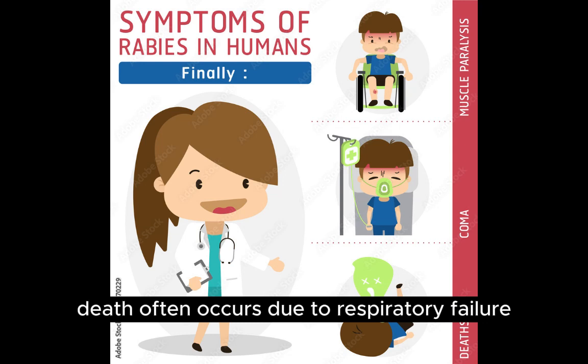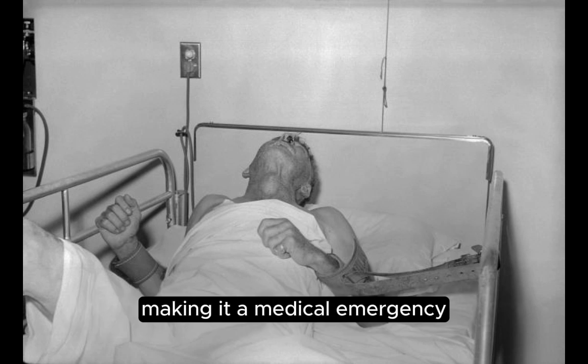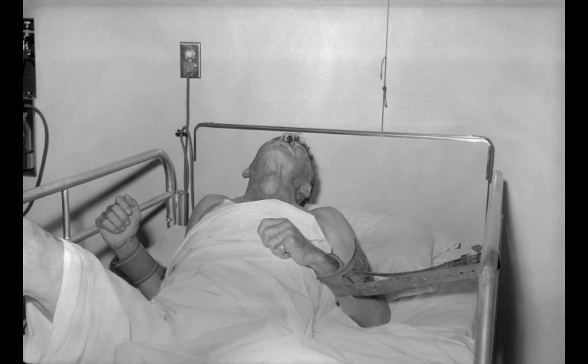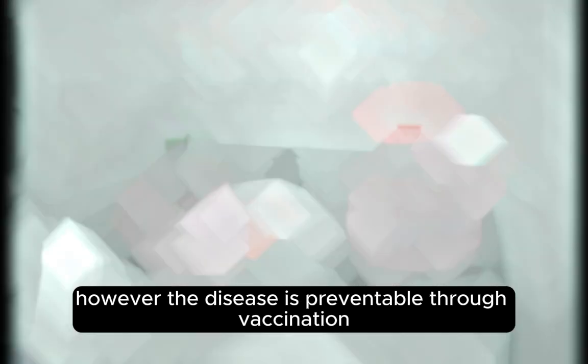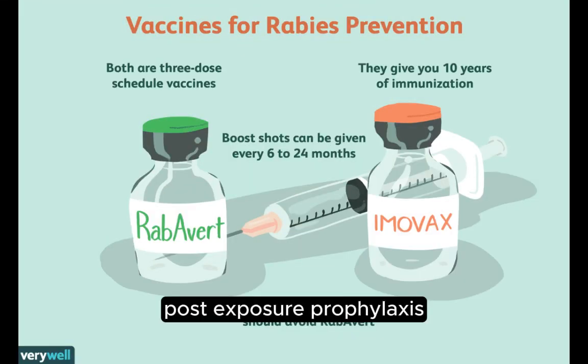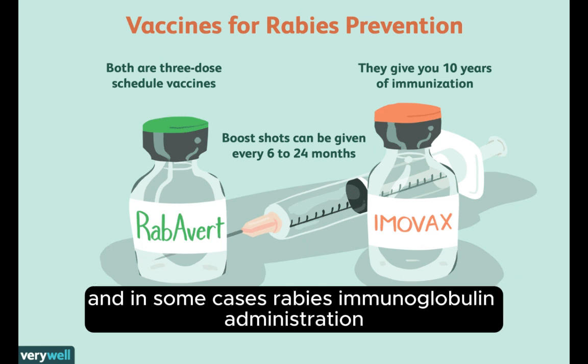Death often occurs due to respiratory failure. Rabies is almost always fatal once symptoms appear, making it a medical emergency. However, the disease is preventable through vaccination. Post-exposure prophylaxis (PEP), which includes a series of rabies vaccinations and, in some cases, rabies immunoglobulin administration, is highly effective in preventing the onset of rabies if administered promptly after exposure to the virus.